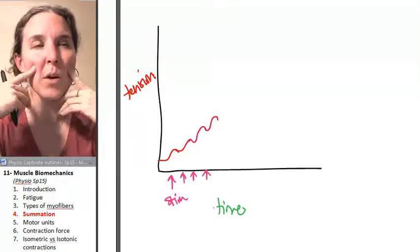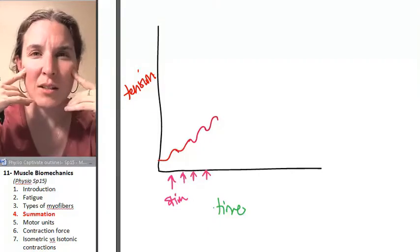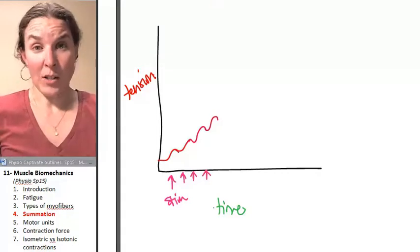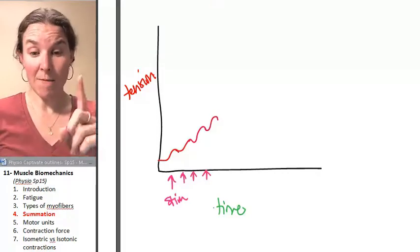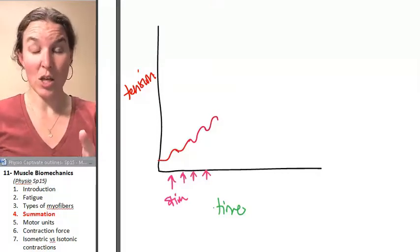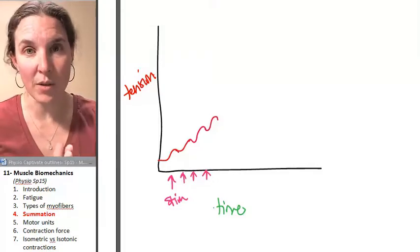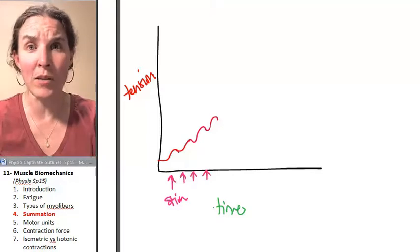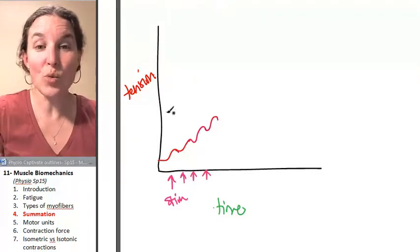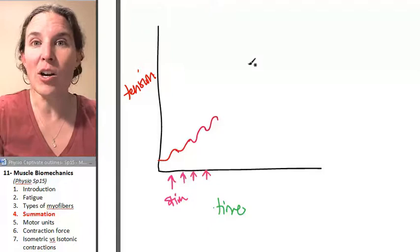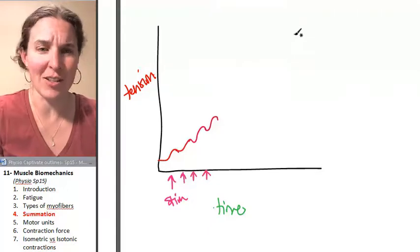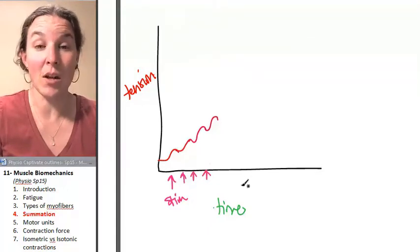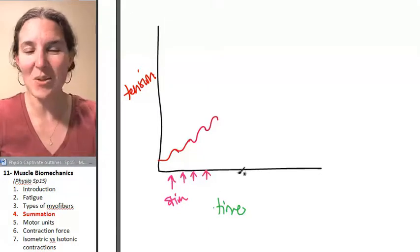Does this work with neurons? It doesn't matter how often you stimulate them. They're going to fire. You can only go so fast with a neuron. You can't actually get a neuron to fire in the middle of an action potential. So you don't have a bigger action potential that's created. An action potential is all or nothing. Skeletal muscles are different.